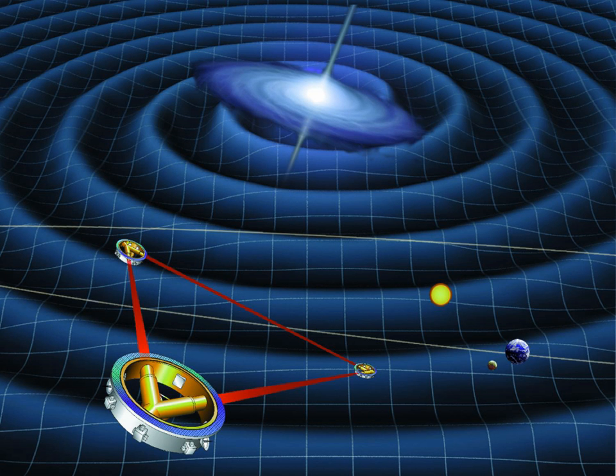The distance between the satellites is precisely monitored to detect a passing gravitational wave. The LISA project started out as a joint effort between the United States Space Agency NASA and the European Space Agency ESA. However, in 2011,